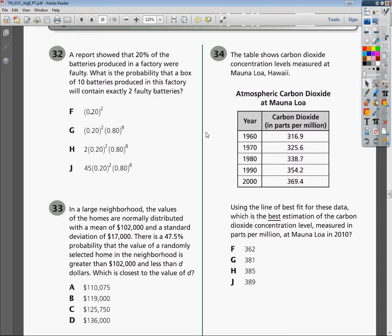The table gives you the atmospheric carbon dioxide based on the years, and then it gives you carbon dioxide in parts per million. If it wasn't in parts per million, everybody would be dead by now.